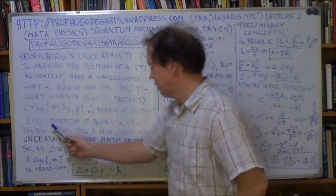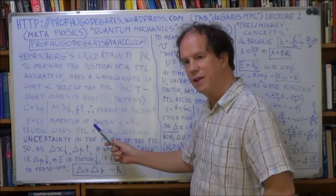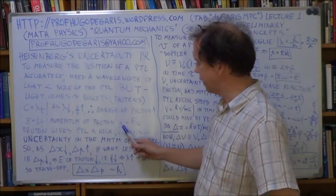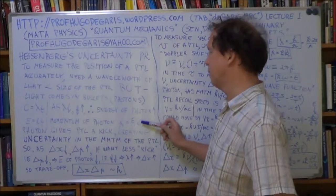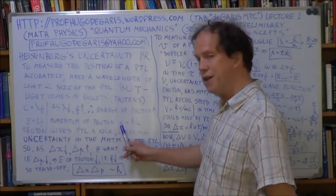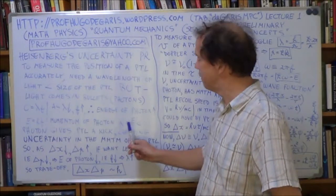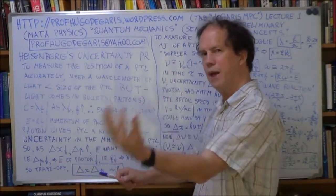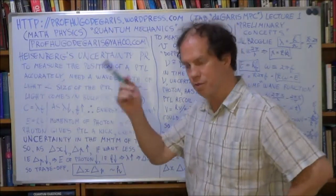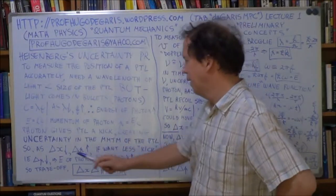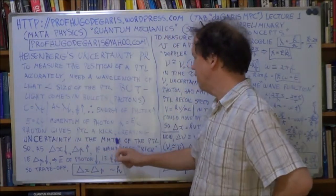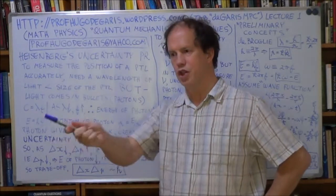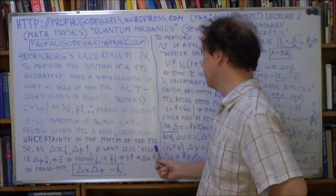The energy goes up, and from relativity and electromagnetic theory — Maxwell's stuff — the momentum of a photon is its energy divided by the speed of light: E divided by C. So as E goes up, the momentum of that photon goes up. It has more kick. So the photon gives the particle that it's looking at — it'll bounce off it and come back to be observed, back to your eye or your microscope. The photon gives the particle a kick, and that creates an uncertainty in the momentum of the particle. If you kick the particle you're trying to observe, you'll give it a jolt in its momentum — you'll change the momentum of that particle.